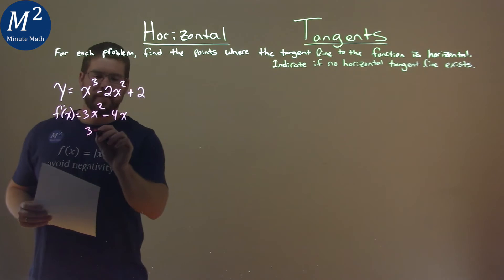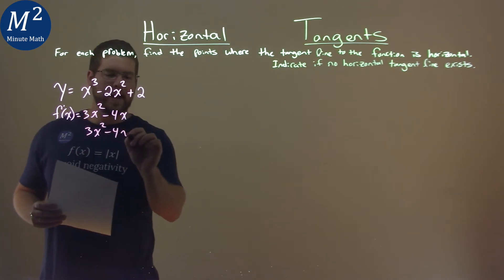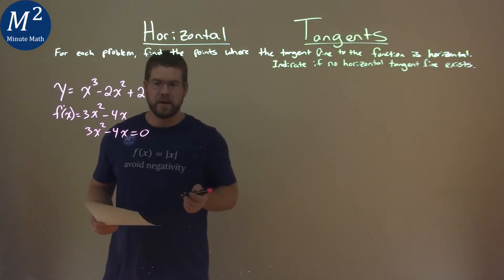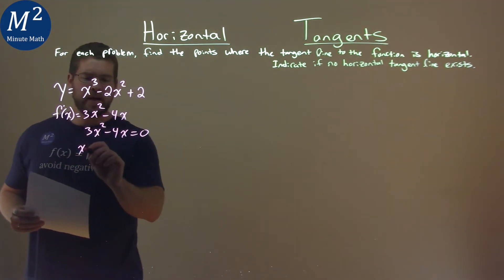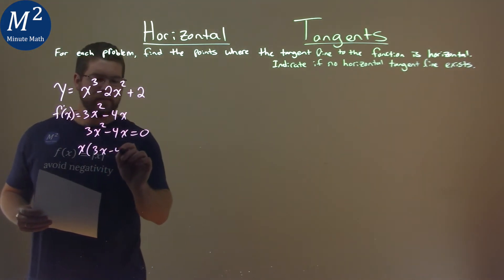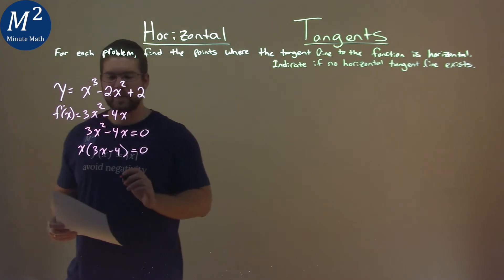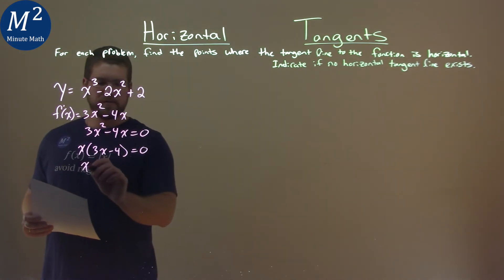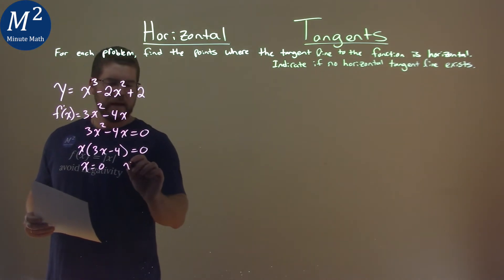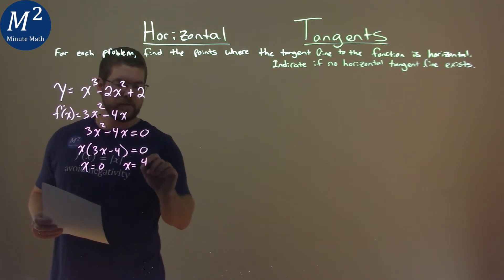So we take 3x squared minus 4x, and we're setting it equal to 0, and now we're solving for x. Let's pull an x out here, x times 3x minus 4 equal to 0, set both parts equal to 0, it's just algebra, x equals 0, and x equals, add 4 to both sides, divided by 3, positive 4 thirds.